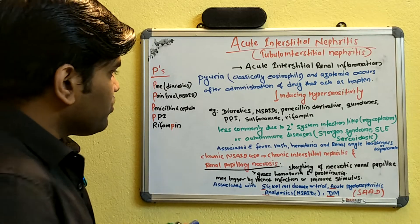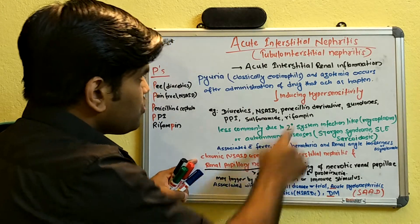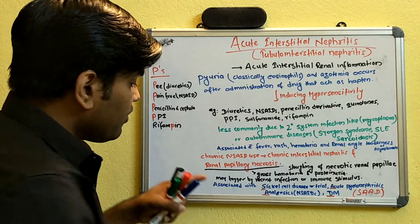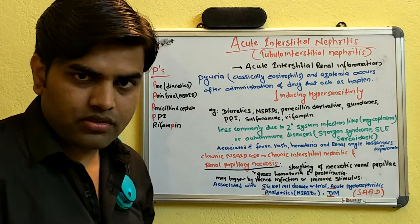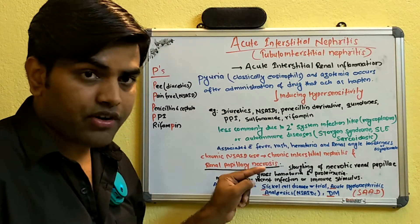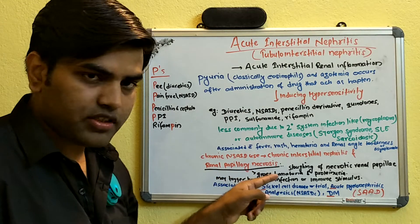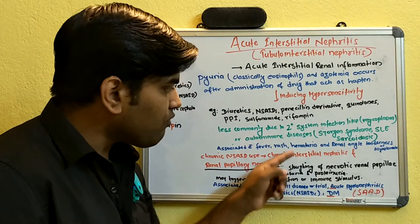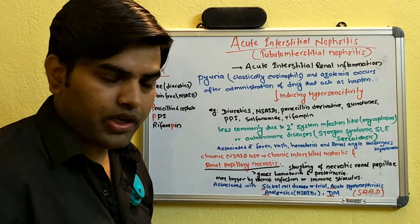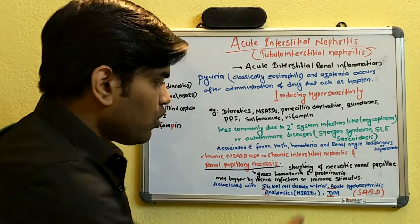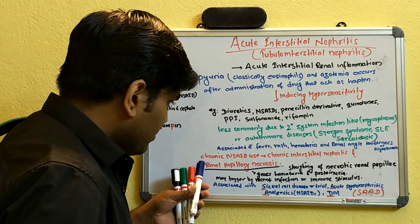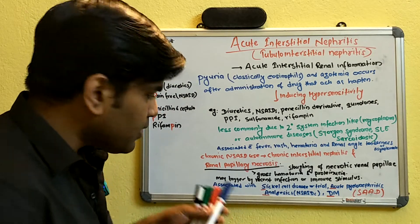With chronic NSAID use, the interstitial inflammation becomes chronic — chronic interstitial nephritis — and can further progress to renal papillary necrosis. Renal papillary necrosis involves sloughing of necrotic renal papillae. Initially we discussed only inflammation, but here necrosis has progressed. It presents with gross hematuria and proteinuria, and may be triggered by a concurrent infection or immune stimulus.